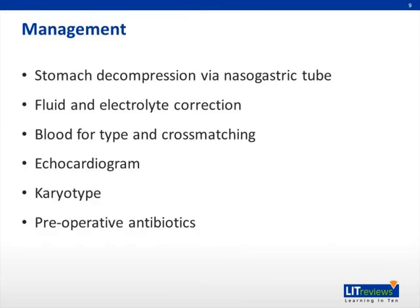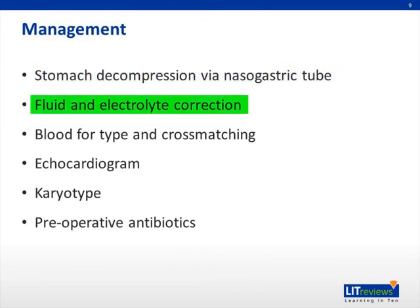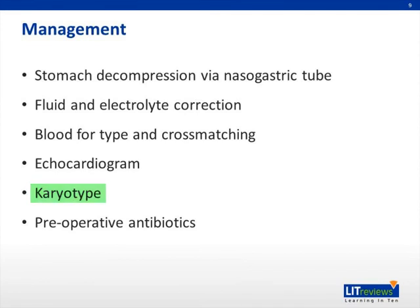Preoperative preparation includes nasogastric decompression, fluid and electrolyte replacement, and a thorough evaluation for associated anomalies. Prophylactic perioperative antibiotics are begun preoperatively. A karyotype should be sent to evaluate for aneuploidy. Even when the diagnosis of duodenal atresia is established in the stable patient, cardiac anatomy and function should be evaluated before surgical correction. In an unstable patient, echocardiography and contrast studies may be required to distinguish hemodynamic compromise caused by volvulus from that caused by cardiac disease.